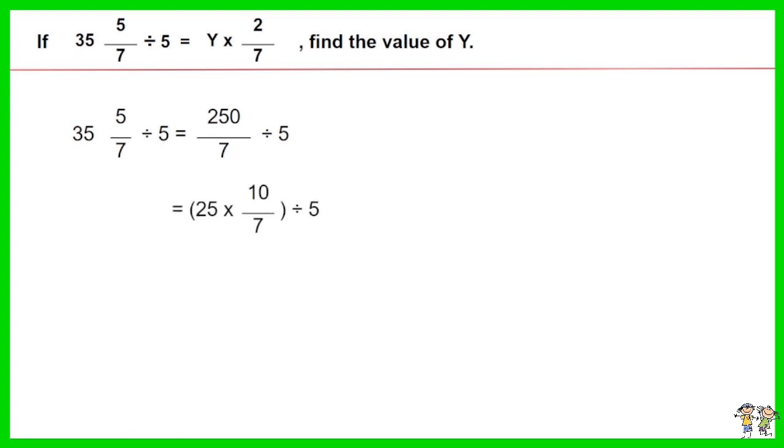250 over 7 is also equal to 25 times 10 over 7. Divide 25 times 10 over 7 by 5, you have 25 times 2 over 7.